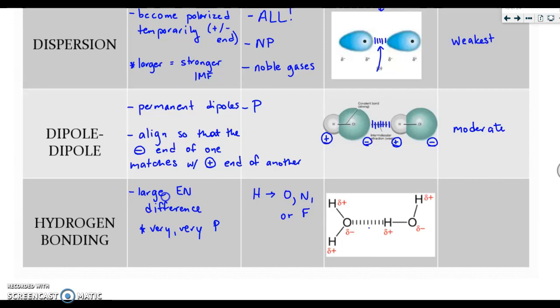Because this is a very special polar bond, or excuse me, a very special polar force that exists, it is also known as the strongest of the three. So these are your three types of IMFs that we will be discovering or discussing further later on.